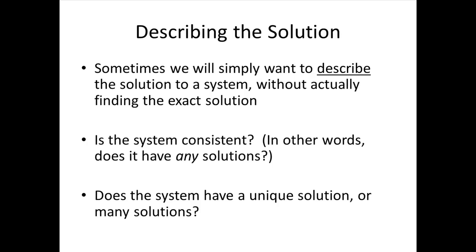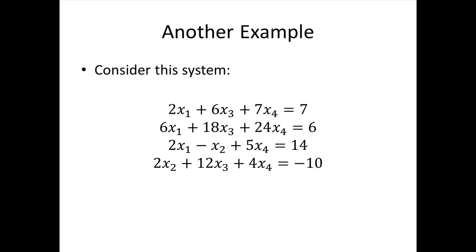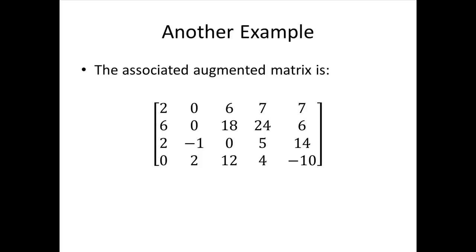Sometimes we only want to describe the nature of the solution rather than finding it exactly. We might want to know: is the system consistent? Does it have a unique solution, or does it have many solutions? Here's a more complicated example — four variables and four equations. To answer these questions, it turns out we only need to look at an echelon form of the matrix, not the full reduced echelon form. Here is one echelon form obtained by row reducing this augmented matrix — and remember, the echelon form is not unique, only the reduced echelon form is.